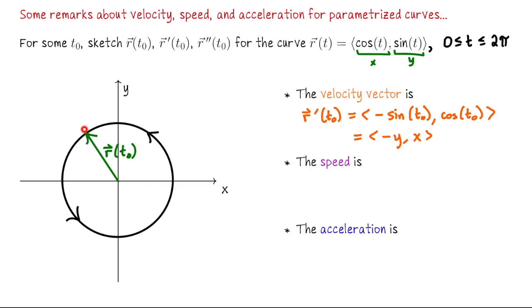So if this is the point x, y, the coordinates of the velocity vector are negative y, x. We could graph that vector in standard position, but it's more illustrative to place it tangent to the curve. This vector, r prime at t-naught, lies tangent to the curve at that point and points in the direction of travel — counterclockwise, in agreement with the motion around the curve.